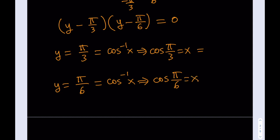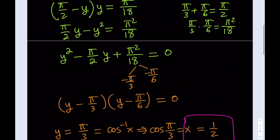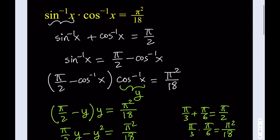So what is x equal to? Cosine of pi over 3 — pi over 3 is 60 degrees, cosine of 60 is sine of 30, that's one half. So x equals one half. And cosine of pi over 6 — pi over 6 is 30 degrees, cosine of 30 is root 3 over 2. We got it! We found the x values. So the solutions are one half and square root of 3 over 2, which are the solutions to this original equation.